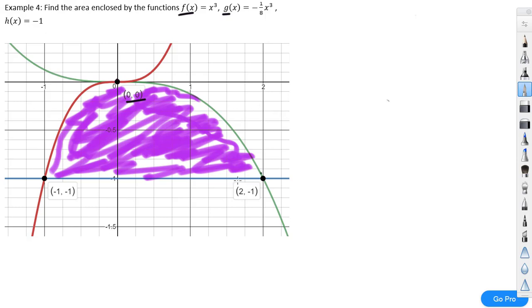So, first if I look at this area here, I see that my function x³ is on top. But then after I hit this point, I have -1/8 x³ on top. And notice that this function -1 is always on the bottom. So what I need to do is split this up into two areas, or two problems. I'm going to have this area here, and this area here.